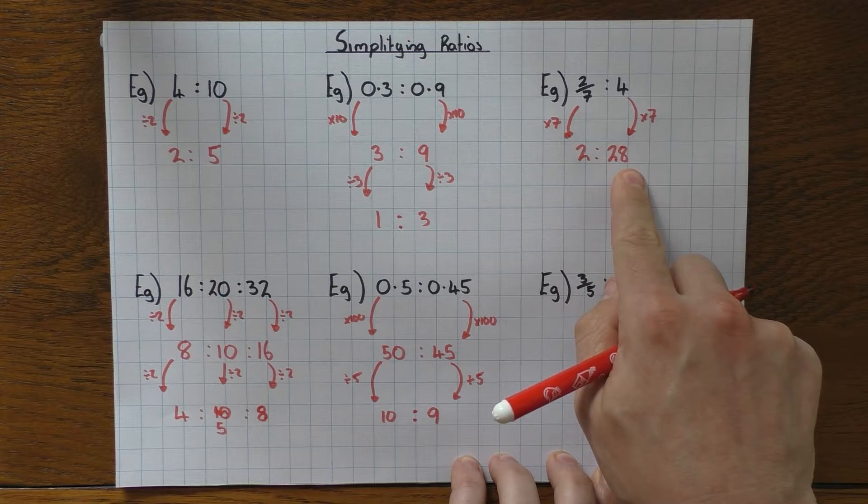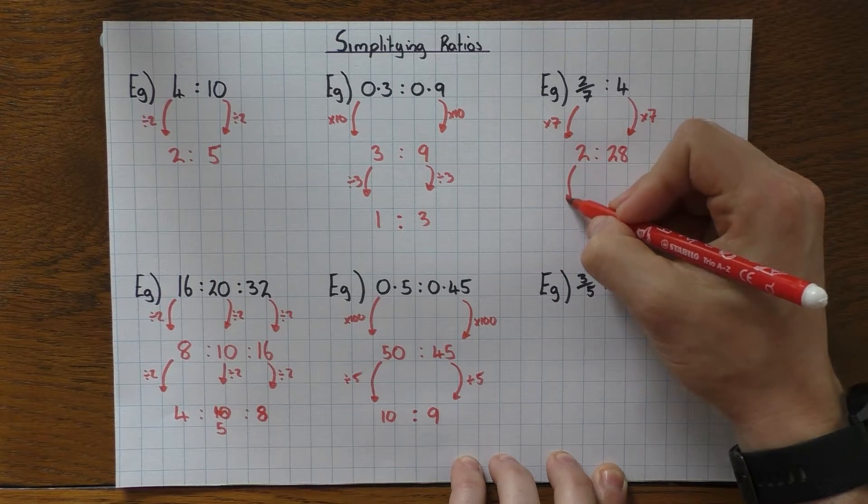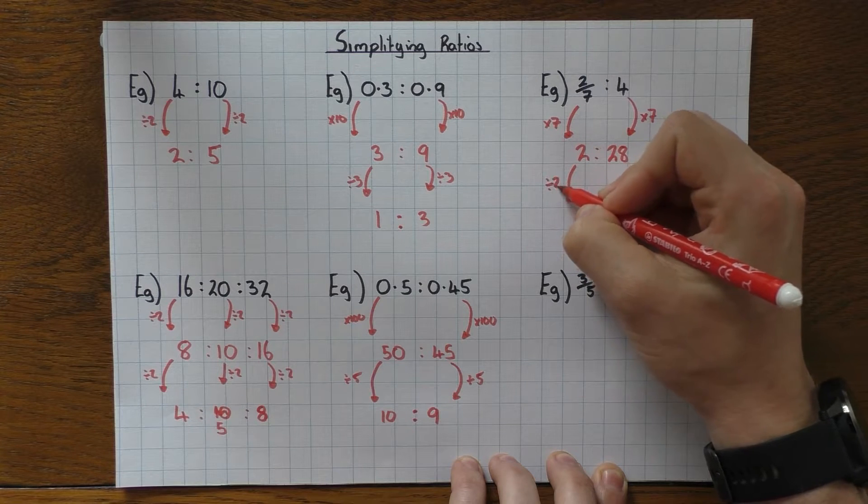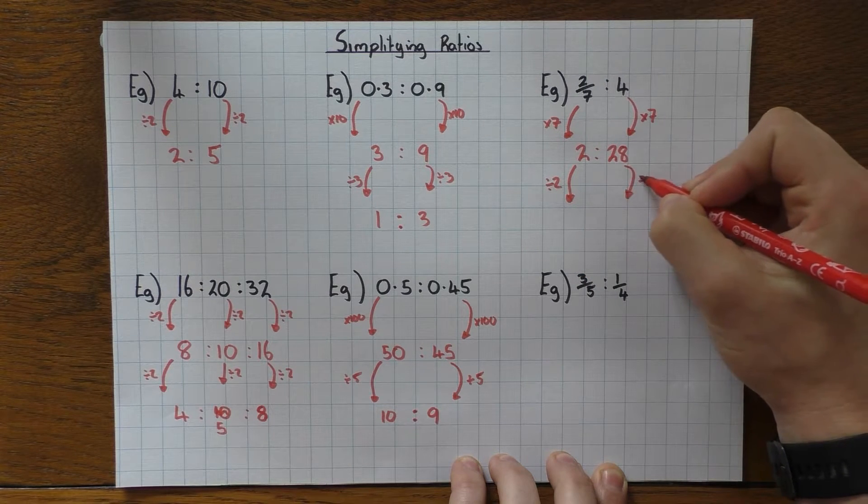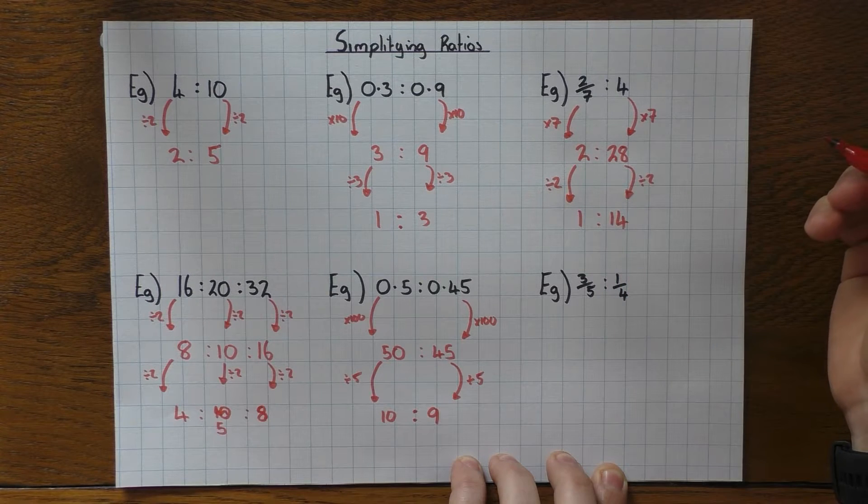This is now my ratio, and I can simplify it like I did here. What number goes into 2 and 28? Well, 2 does, so I can half both of them. So I have 1 to 14 as my final answer.